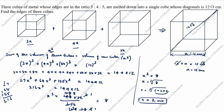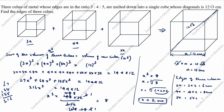In this question we need to find the edges of the 3 cubes. The edges are: 3x equals 3 into 2 equals 6 centimeters; 4x equals 4 into 2 equals 8 centimeters; 5x equals 5 into 2 equals 10 centimeters. So the edges of the three cubes are 6 cm, 8 cm, and 10 cm. That is the answer. Thanks for watching this video.